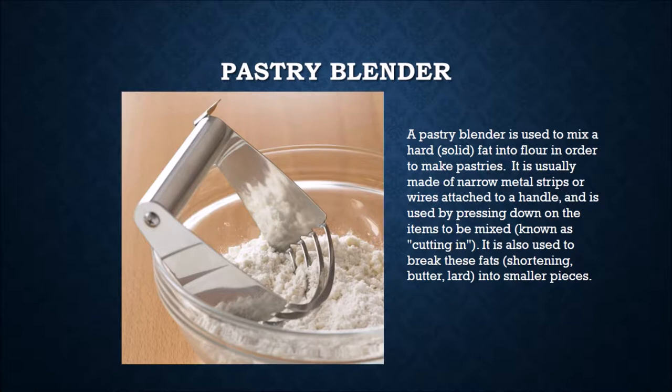A pastry blender is used to mix a hard or solid fat into flour in order to make pastries. It is usually made of narrow metal strips or wires attached to a handle and is used by pressing down on the items to be mixed, known as cutting in. It is also used to break fats such as shortening, butter, or lard into smaller pieces.